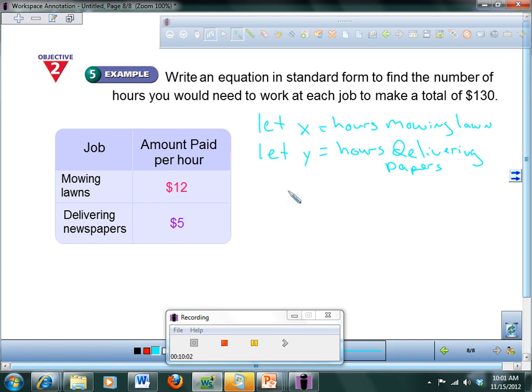So now I could write an equation. I make $12 an hour for mowing lawns. So I could say that 12 times the number of hours I mow lawns plus $5 for delivering newspapers times the number of hours delivering newspapers equals how much? How much money do I make? $130. I think those iPods are blocking your brains. That's what I think. I think they block your brain's synapses so you can't focus. And that's it.